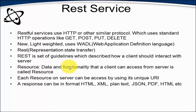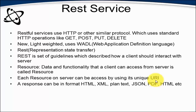Each functionality accessible via REST services is called a resource. For example, a tax calculation web service may provide functionalities like calculating income tax, sales tax, and service tax — all these are called resources in REST services. Each resource can be accessed by a URI. The advantage of REST is that rather than accessing the complete application, we can access only one specific functionality. In SOAP services, using WSDL means we access the complete application, but in REST services, if we want to access only a particular functionality, we can use its URI.